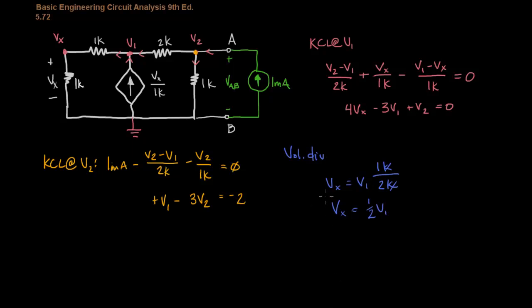So, now what we can do is plug this into this equation here, and when we do that, we'll then end up with a system of two equations with two unknowns. So, let's go ahead and do that. So, we'll say we're going to plug voltage division solution into this equation. So, that's four times one-half V1 minus three V1 plus V2 equals zero.